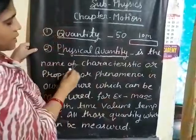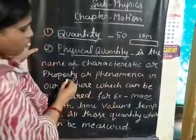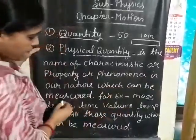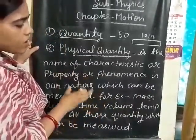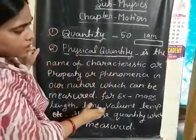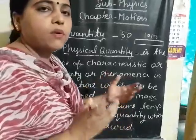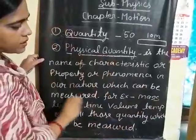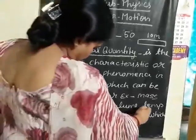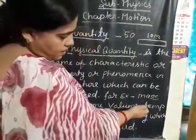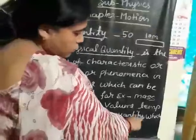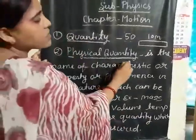Physical quantity is the name of a characteristic, property, or phenomena in nature which can be measured. All quantities that you can measure are called physical quantities. Physical quantity can be anything — any property that you cannot describe without measuring it is a physical quantity. For example: mass, length, time, volume, temperature. All those quantities which can be measured are called physical quantities.